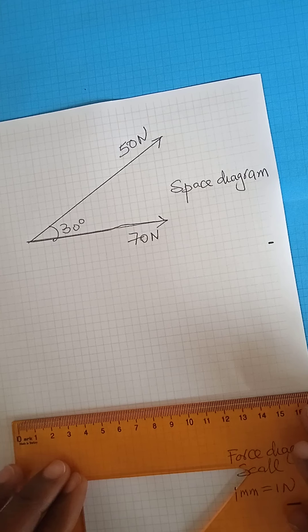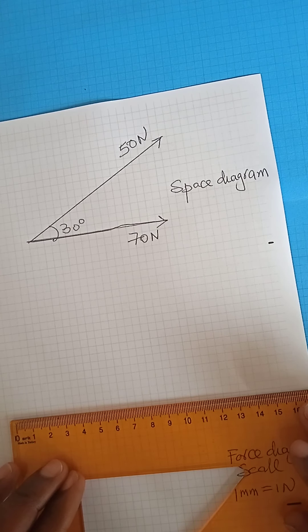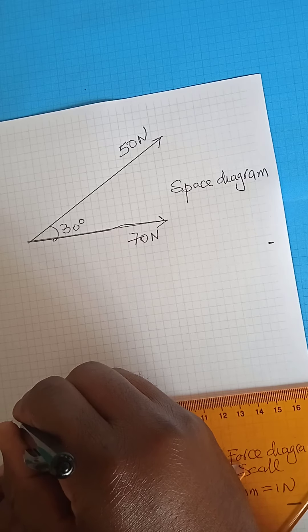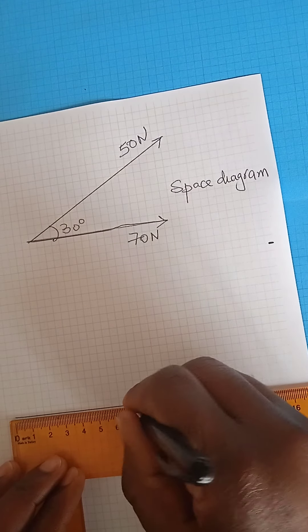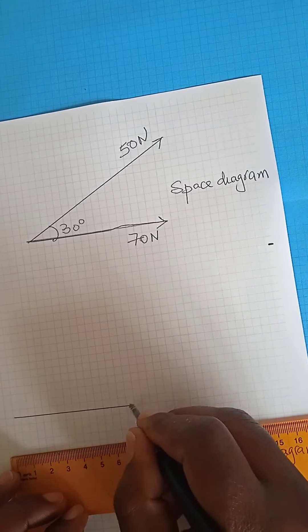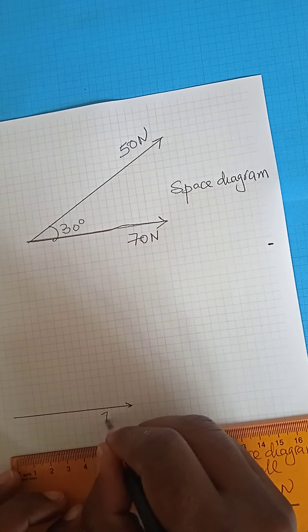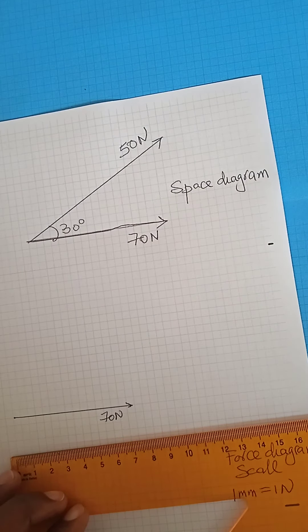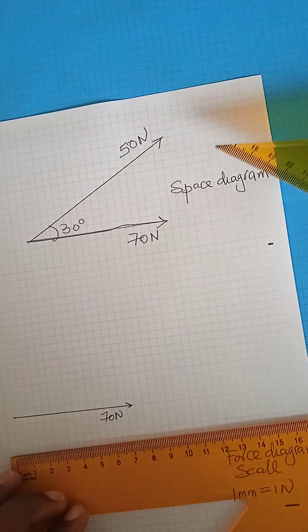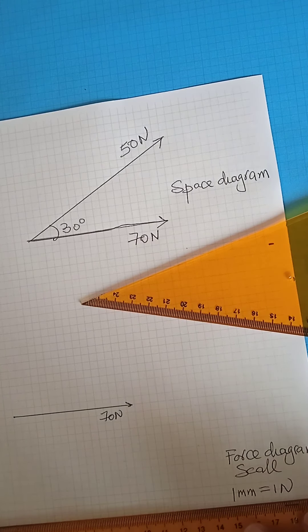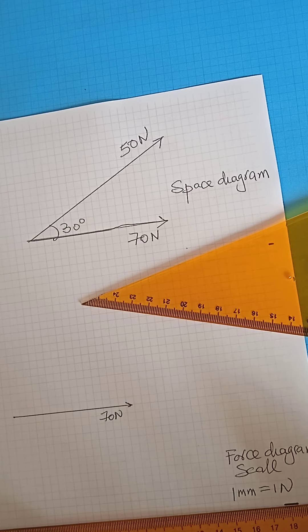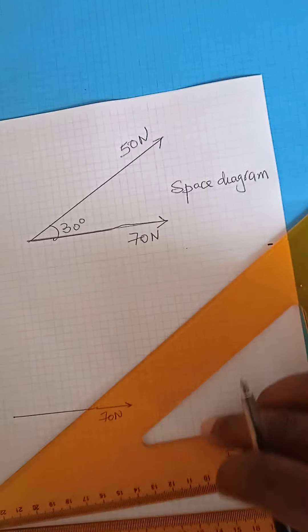Right, I will draw my 70 Newton force. That will be 70 millimeters. There is 70 Newton. And from this point, the 50 Newton force that is acting 30 degrees. You can use your protractor. But for an angle of 30 degrees, I can simply use my 60 by 30 degrees set square.